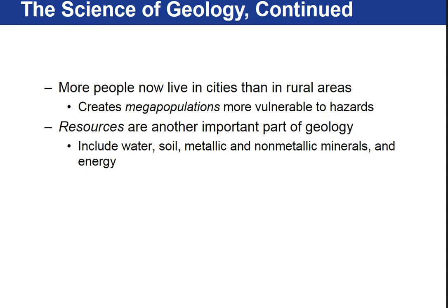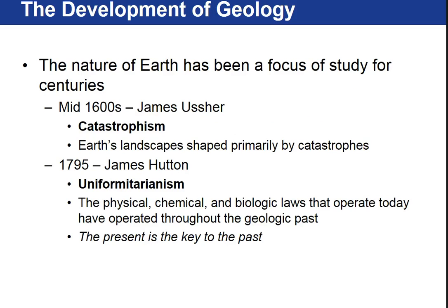A little bit of history here. In the mid-1600s, James Usher was an archbishop and his thought was that the earth was approximately 4,000 years old. So all of the landscape that he saw on earth, he thought had to have happened very rapidly due to the young age of the earth. This idea is called catastrophism.